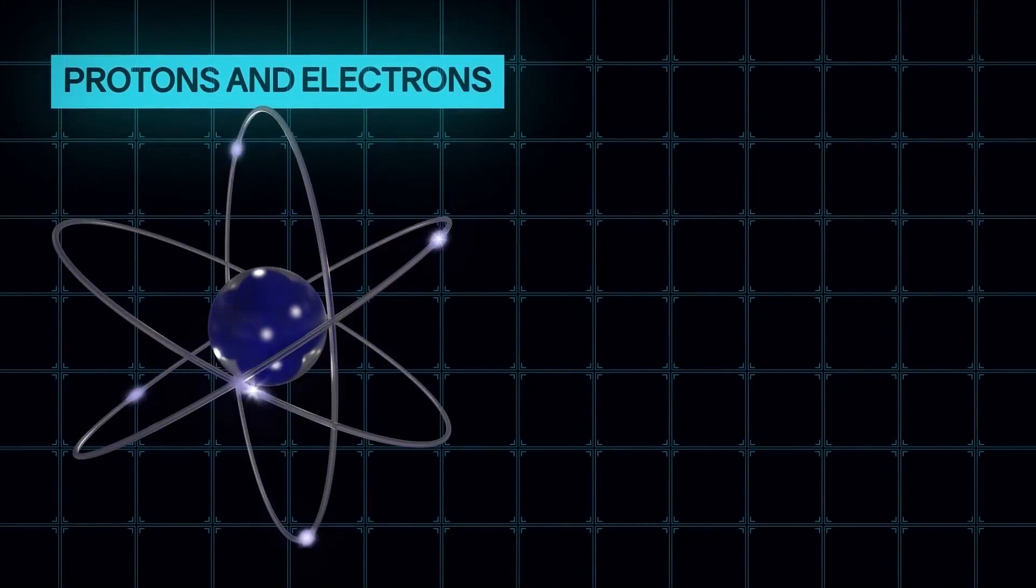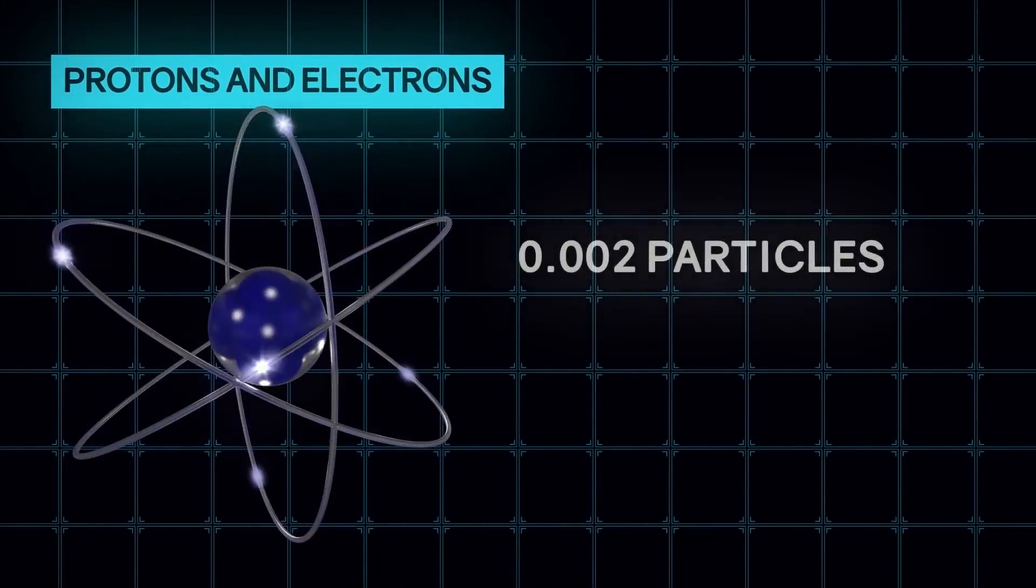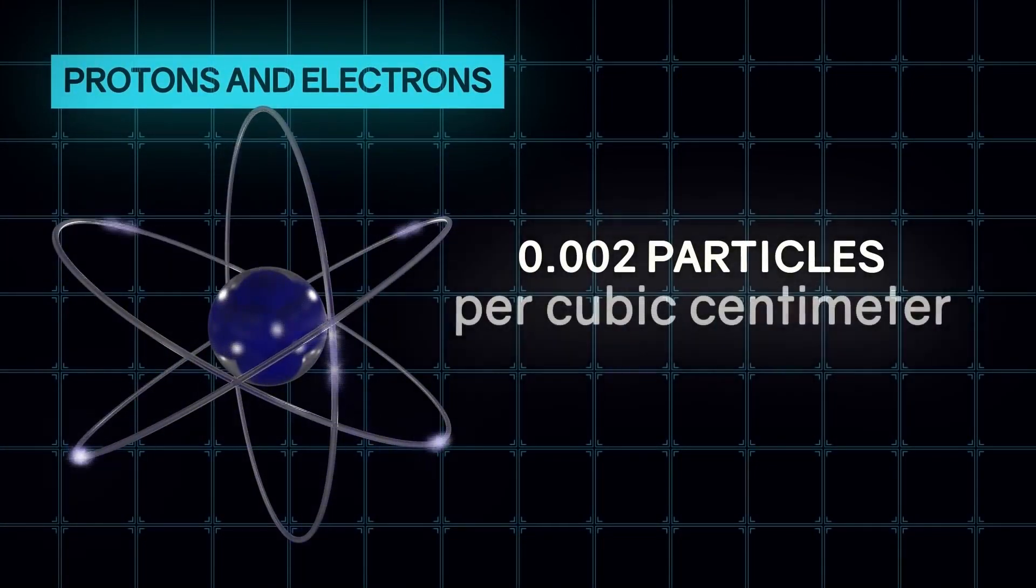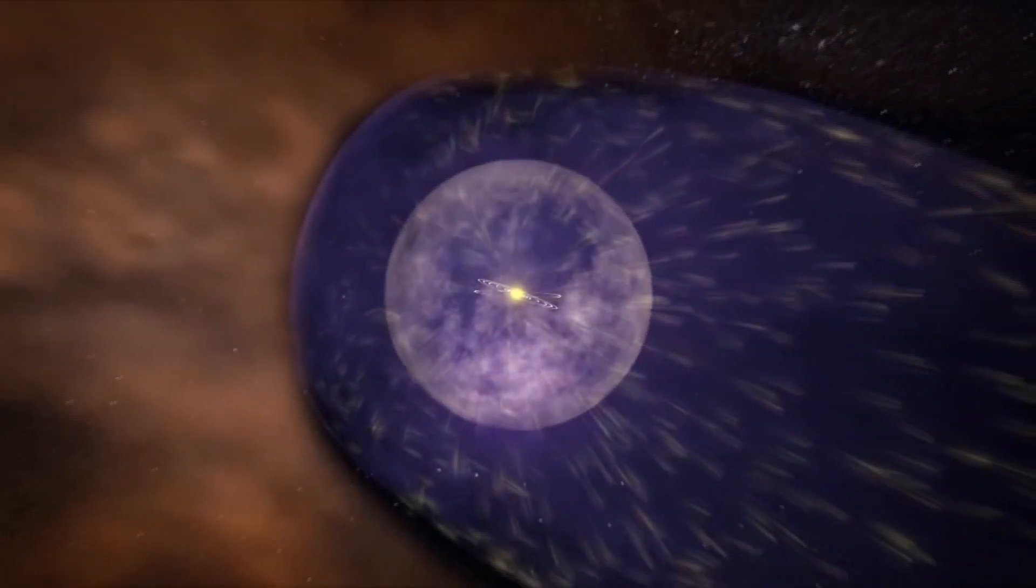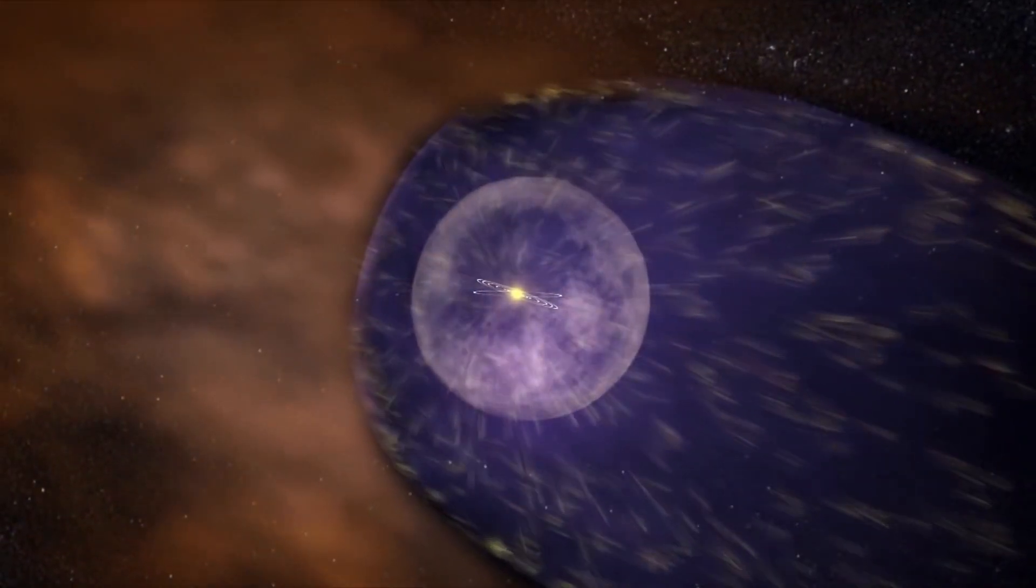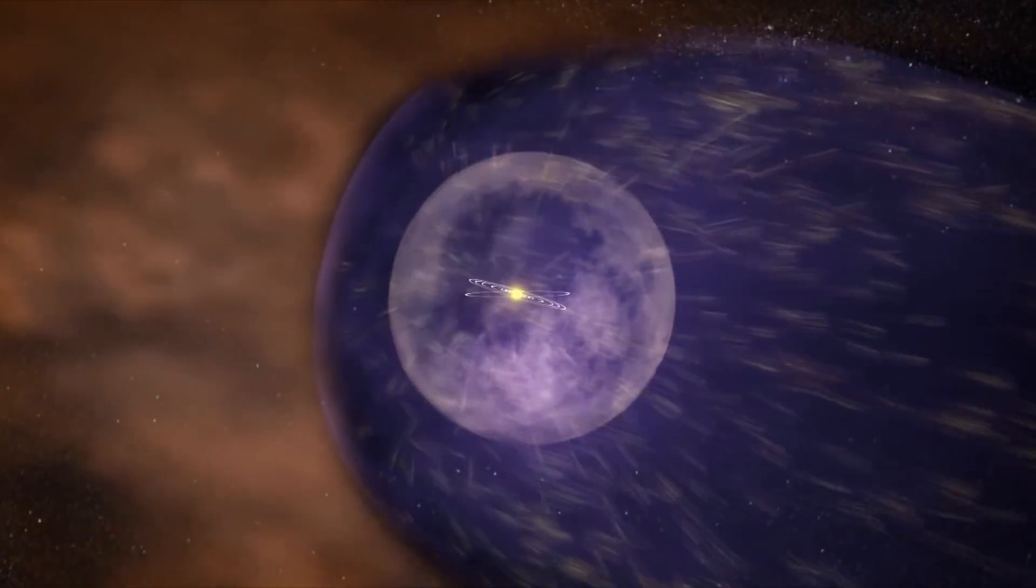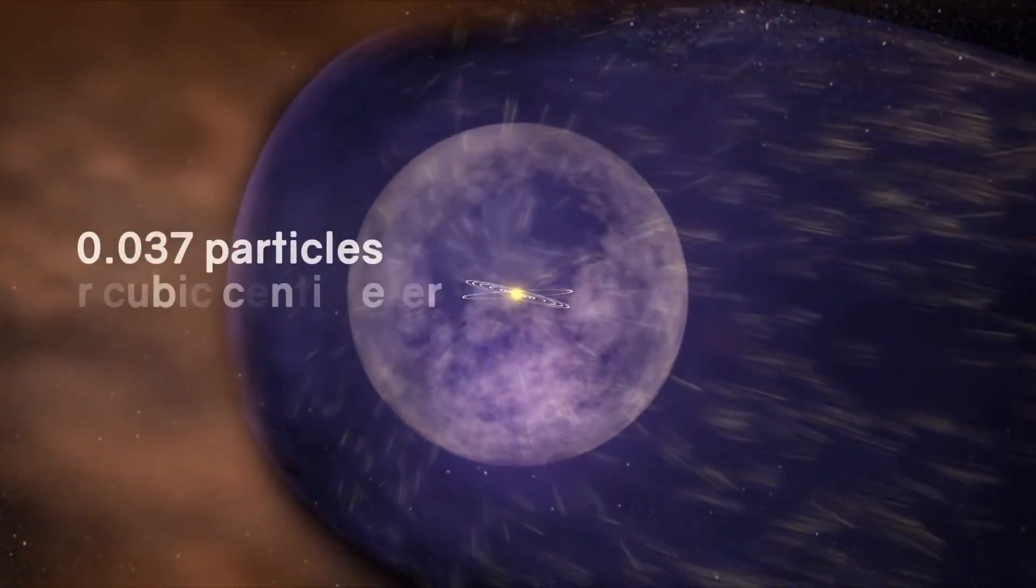The density of protons and electrons at this limit is 0.002 particles per cubic meter. The density of particles behind the heliopause, that is in interstellar space, should be 0.037 particles per cubic centimeter, according to calculations.